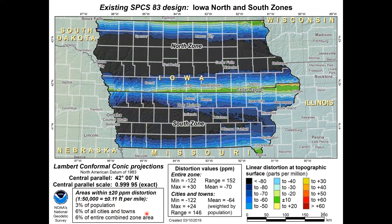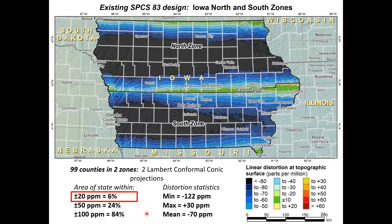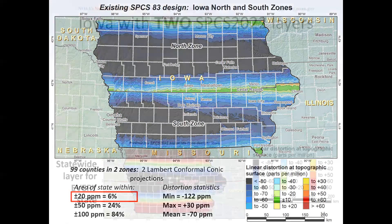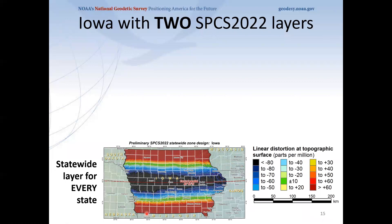Without input from Iowa requesting those 14 low distortion projection zones, we would give them something like their existing state plane system — two Lambert zones. So every state gets a statewide zone as a base layer. Iowa has indicated they also want a multiple zone layer covering the entire state.